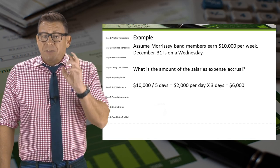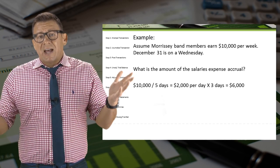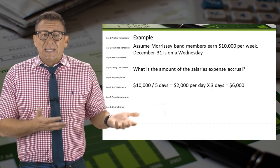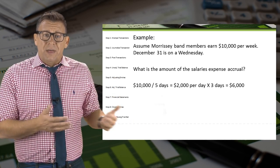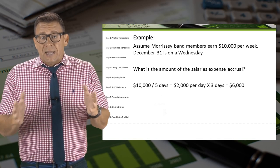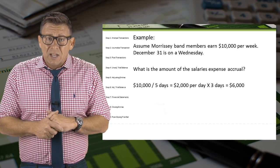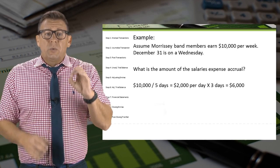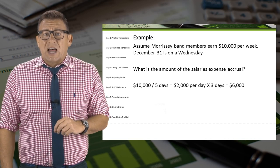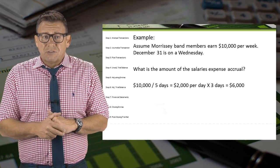If the band members make $10,000 per week, let's divide that by 5 to get a daily amount of $2,000. Next, since December 31st is a Wednesday, we need to accrue 3 days of salary for a total of $6,000.